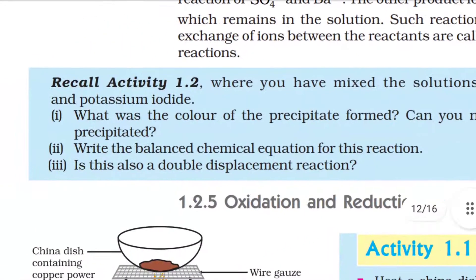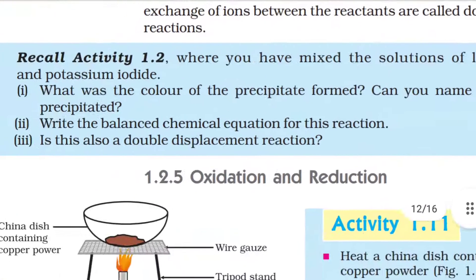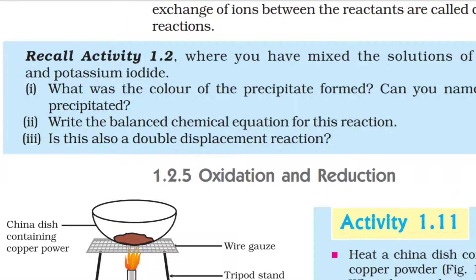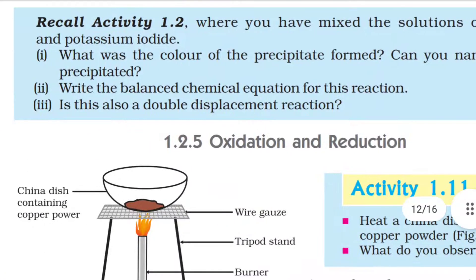Recall Activity 1.2, where you mixed solutions of lead nitrate and potassium iodide. Questions: (1) What was the color of the precipitate formed? Can you name the compound precipitated? (2) Write the balanced chemical equation for this reaction. (3) Is this also a double displacement reaction?